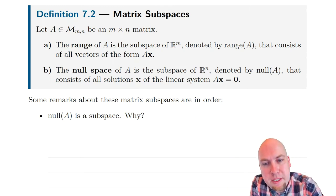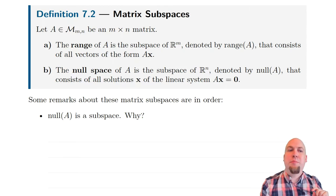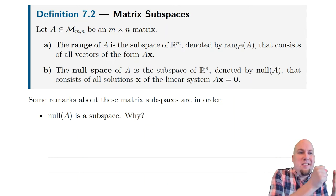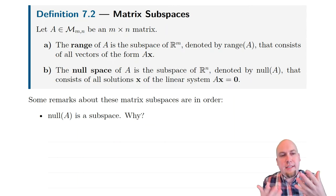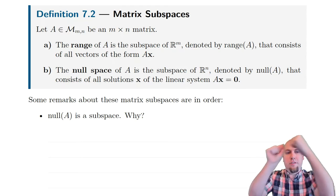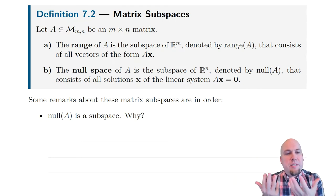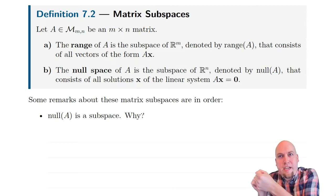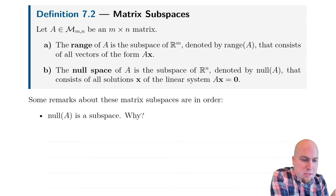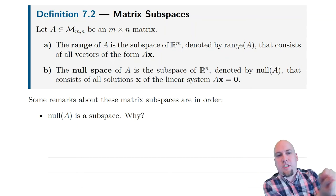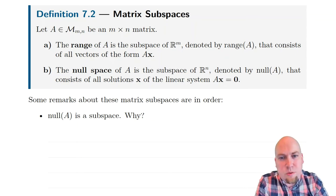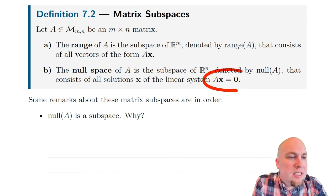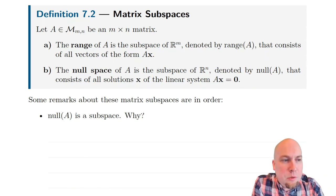The other new subspace is called the null space. If you think of A as a linear transformation sending vectors to vectors, then the null space is the set of all input vectors x that get mapped down to zero — everything that gets squished right down to the origin. In other words, it's the set of solutions to the linear system Ax equals zero.